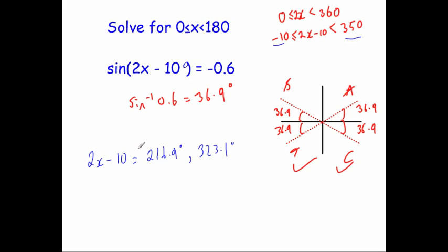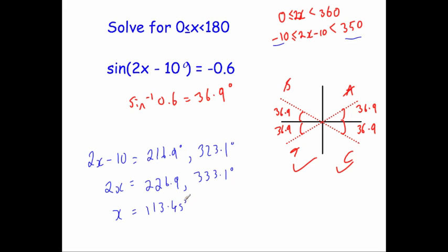We've got our solutions for 2x minus 10, but we've been asked to find x, so we need to solve that. We're going to add 10 to both answers, giving 226.9 and 333.1 degrees. Then we divide both by 2: 226.9 divided by 2 gives 113.45 degrees, and 333.1 divided by 2 gives 166.55 degrees. And that's our answer.